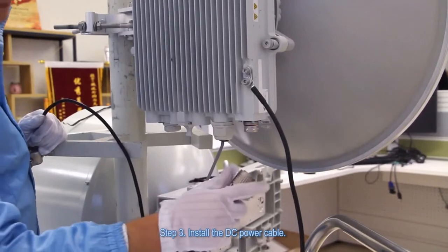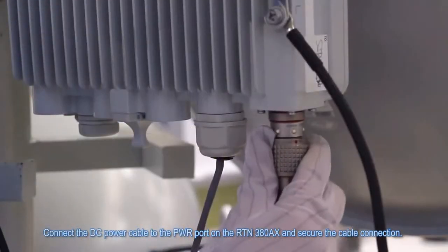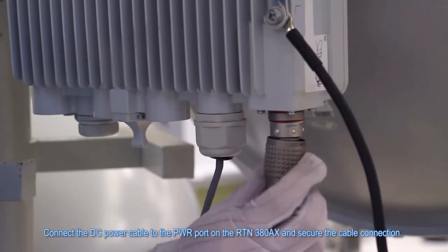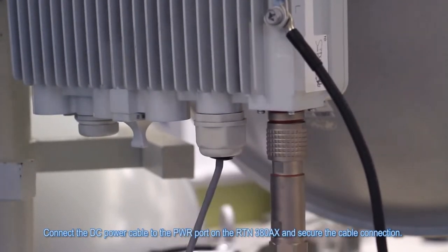Step 3: Install the DC power cable. Connect the DC power cable to the PWR port on the RTN380AX and secure the cable connection.